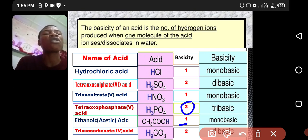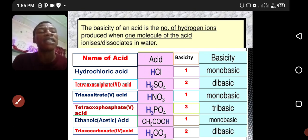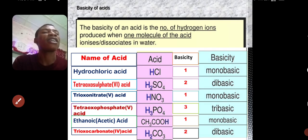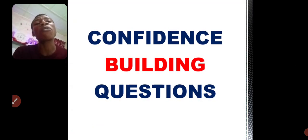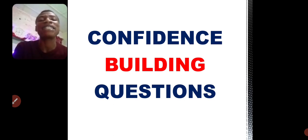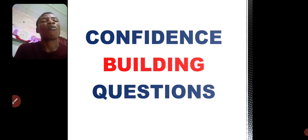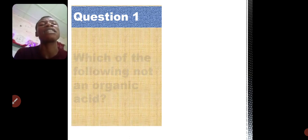Trioxocarbonate IV acid has a basicity of two, hence it is dibasic. Now let's look at some confidence-building questions which I want you to write answers to in your notes. You can pause this video to write and answer the questions.